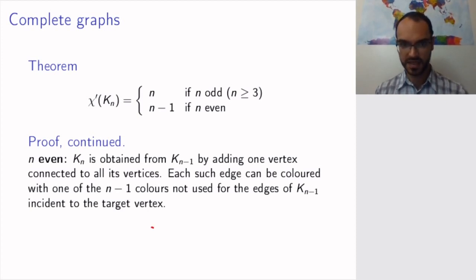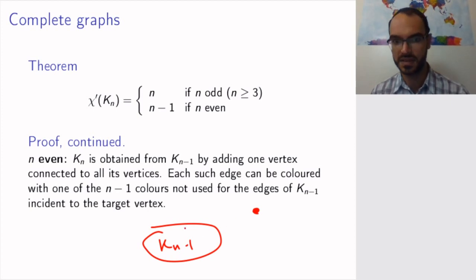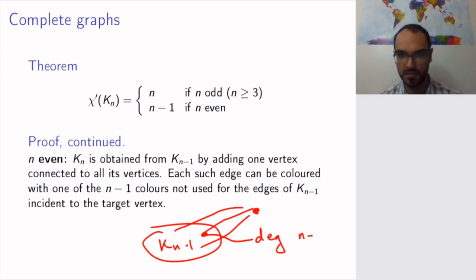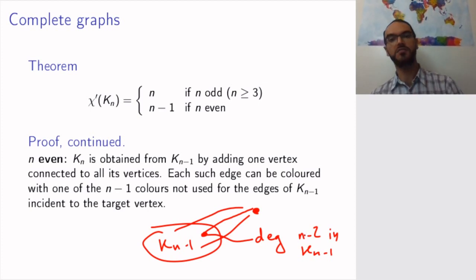And so I have here Kn-1. And I get my new graph by adding this nth edge and connecting it to my Kn-1 here to some vertex. So sorry, the nth vertex and connecting it to every possible vertex. So now this vertex here has degree n-2 in Kn-1. So there are n-1 vertices in total in this graph. And so there are n-2 edges coming into this vertex from the Kn-1 graph.